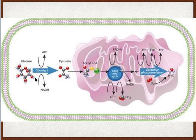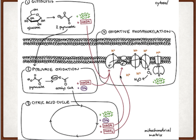Glycolysis takes place in the cytoplasm and the product is a pyruvate molecule. This pyruvate molecule then enters into the mitochondria with the cell's own energy expenses and acetyl coenzyme A is produced. Acetyl coenzyme A then enters into another cycle called the citric acid cycle, also called Krebs cycle. Glycolysis and the citric acid cycle produce some reduced coenzyme NADH and ATP directly.